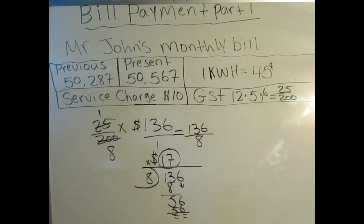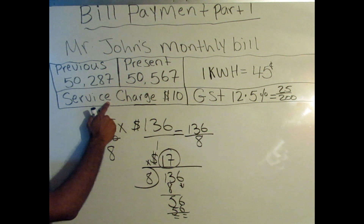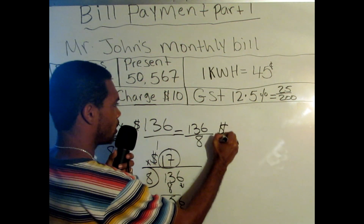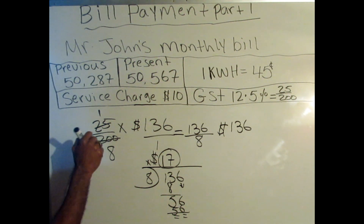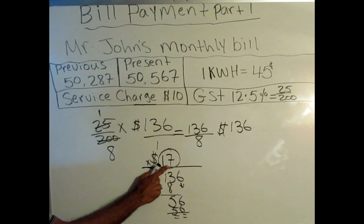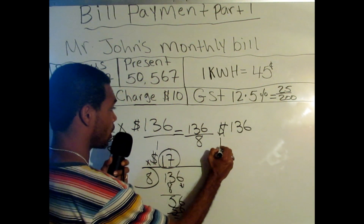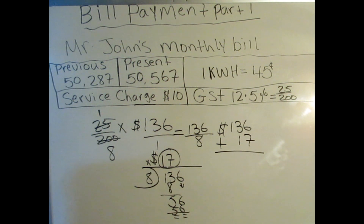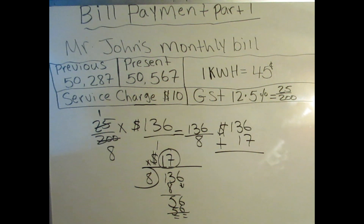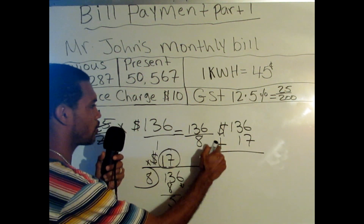For the final step, after adding the $10 service charge our bill was $136. After finding the 12.5% GST — 25 over 200 times 136 — we got $17. We add $17 to $136 and the bill is solved. For the month, Mr. John will pay $153 for the kilowatts he used, the service charge, and the government's 12.5% GST. Subscribe for more and look forward to part two of this bill.